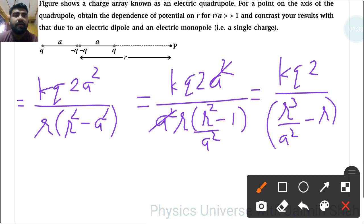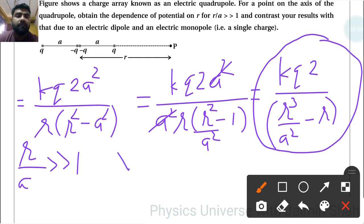Now we know that here R upon A, R upon A is very much greater than 1, so that is R upon A means R is so much greater than A. So we can compare this whole term with V proportional to 1 upon R cube. So V proportional to 1 upon R cube.